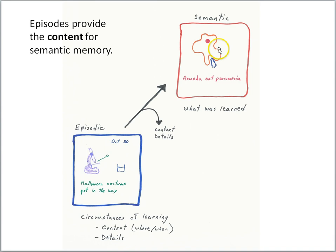But sometimes what happens is that we store the information about what was learned, but we lose the context and the details of the learning circumstances. And if we lose that information, then all we're left with is semantic memory.